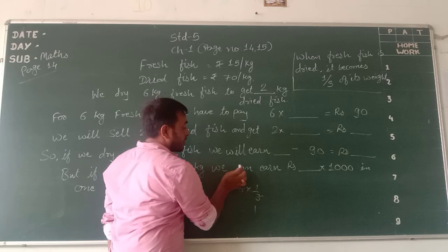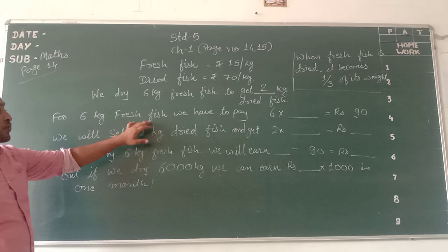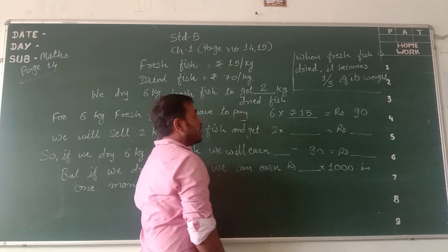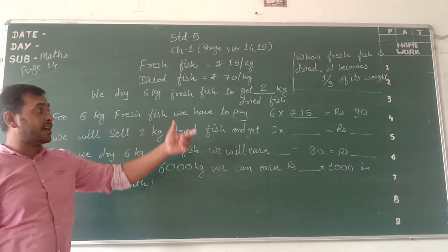Now, for 6 kg fresh fish, we have to pay 6 into 15 rupees. So fresh fish price is 15 rupees per kg, which will come to 90 rupees. When we purchase the fresh fish, we have to pay 90 rupees.